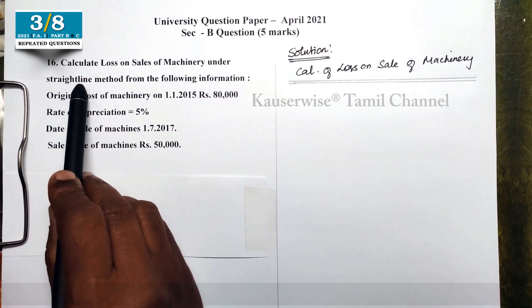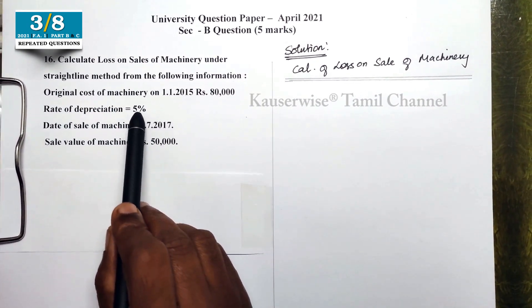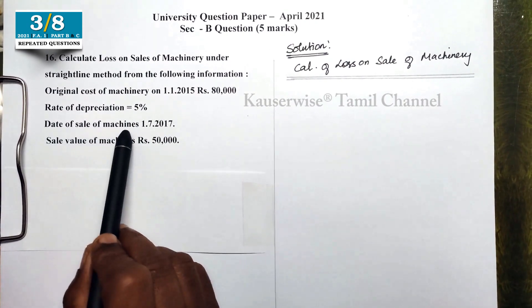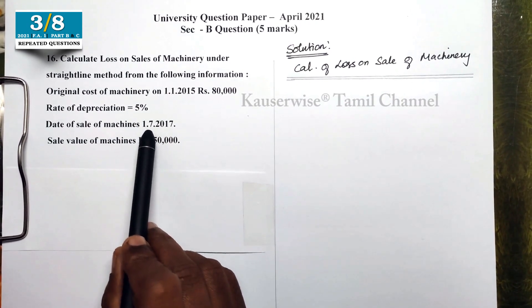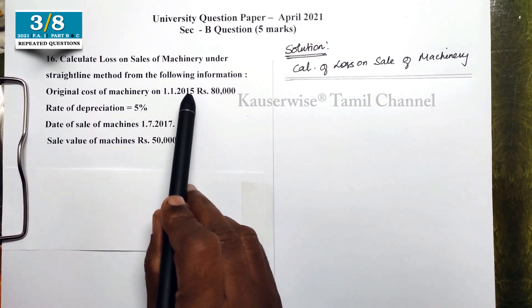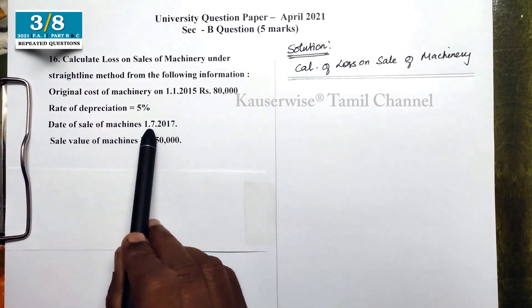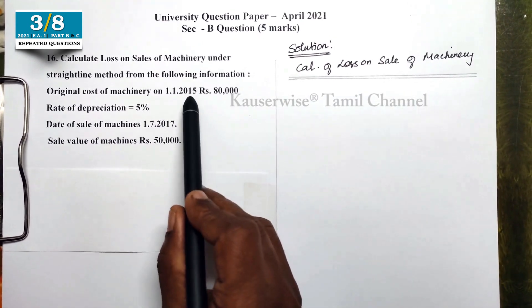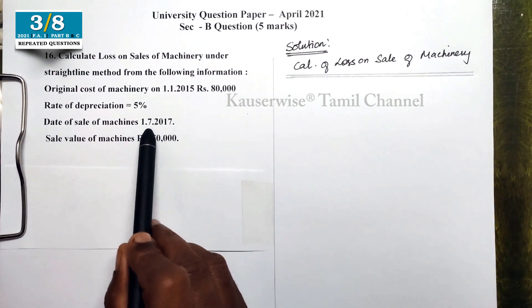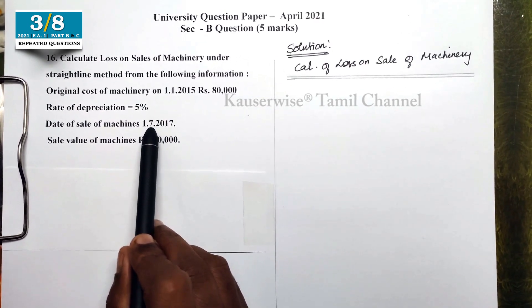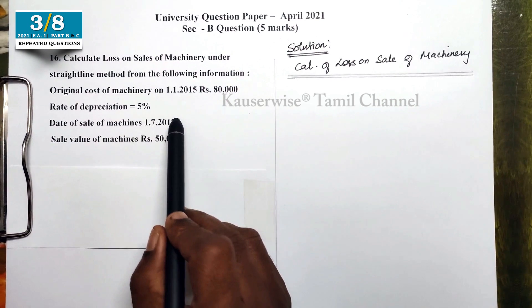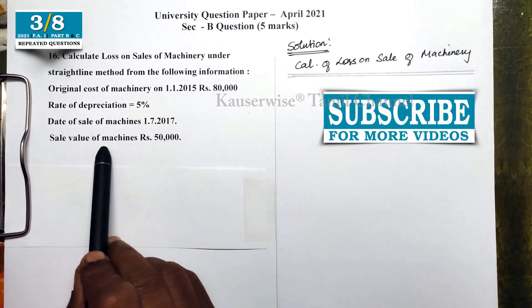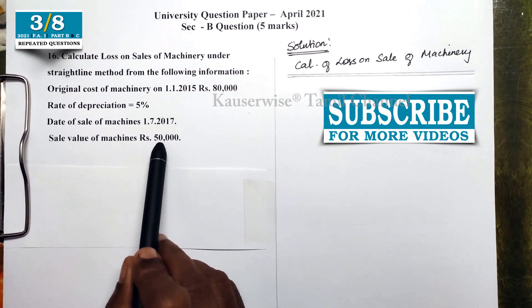It is the straight line method, so every year 5% on the original value is calculated. The date of sale of the machine is 1st July 2017. The machine was purchased in January 2015. We used it for 2015 full year, 2016 full year, and up to June 2017. The sale value of the machine is 50,000.